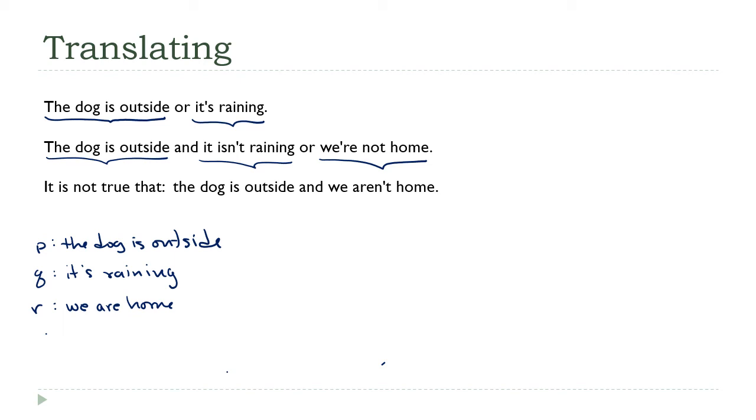...to define the variables with statements that are in a sense positive, which is why instead of saying 'not home' I went with 'our home.' So now let's keep going here. 'The dog is outside' - we've talked about that. 'We aren't home' - that's going to be the negation of r. And that's everything. That's all the statements.